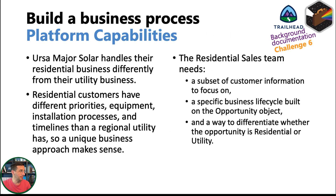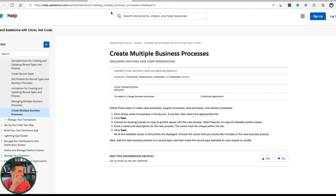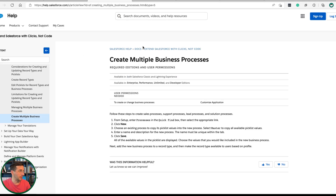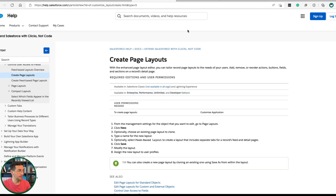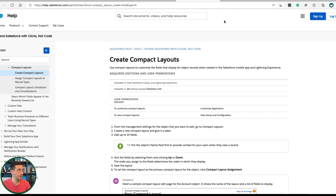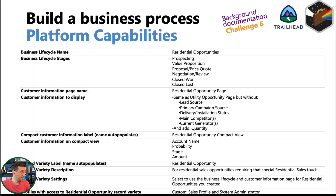The sixth part covers platform capabilities. The residential sales team needs a subset of customer information to focus on a specific business life cycle — there's nothing in Salesforce literally called a business life cycle, so it means something different. You're building the opportunity object to differentiate whether the opportunity is residential or utility. The help documents 'Create Multiple Business Processes,' 'Create Page Layouts,' 'Compact Layouts,' and 'Record Types' all had useful information here.